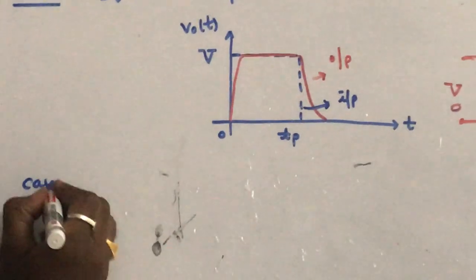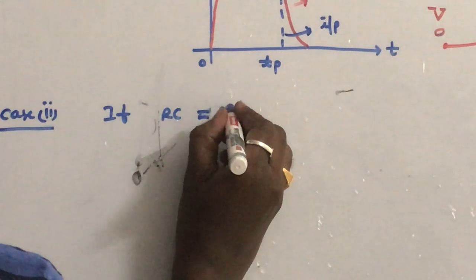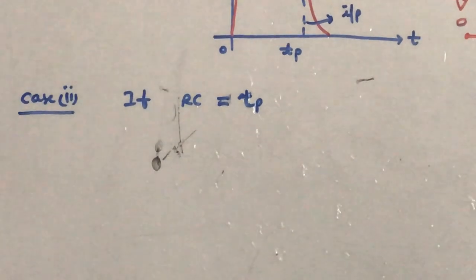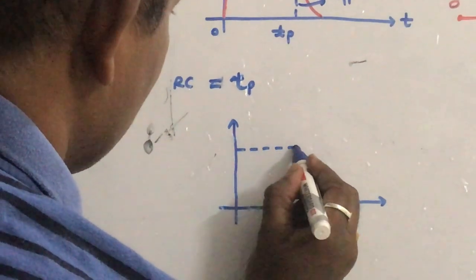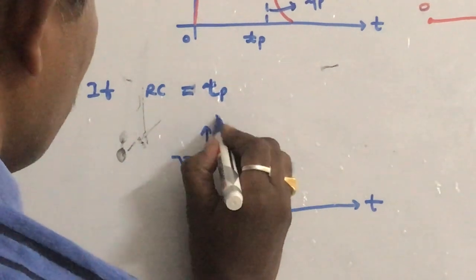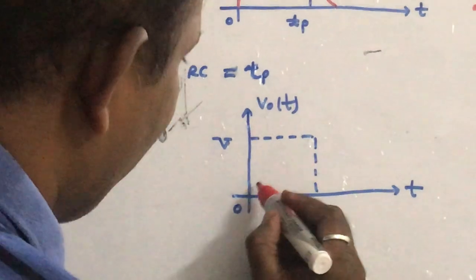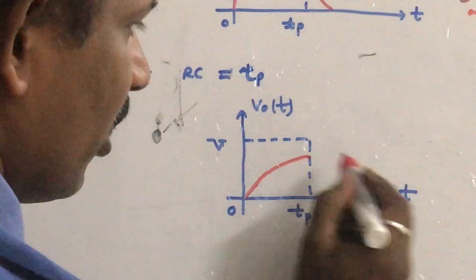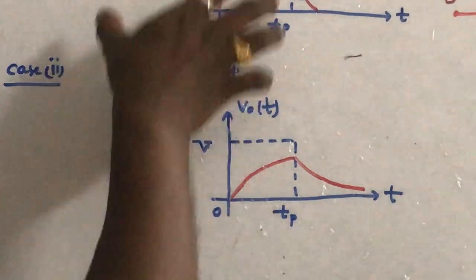Case 2: if RC is comparable to Tp — the time constant is comparable to Tp, for example around 1 millisecond. The capacitor charges exponentially towards V, but by the time the input voltage becomes 0 at Tp, the capacitor has not fully reached V. Therefore the capacitor then discharges exponentially. These two graphs — exponential charging and discharging — represent the output when the time constant is comparable to Tp.